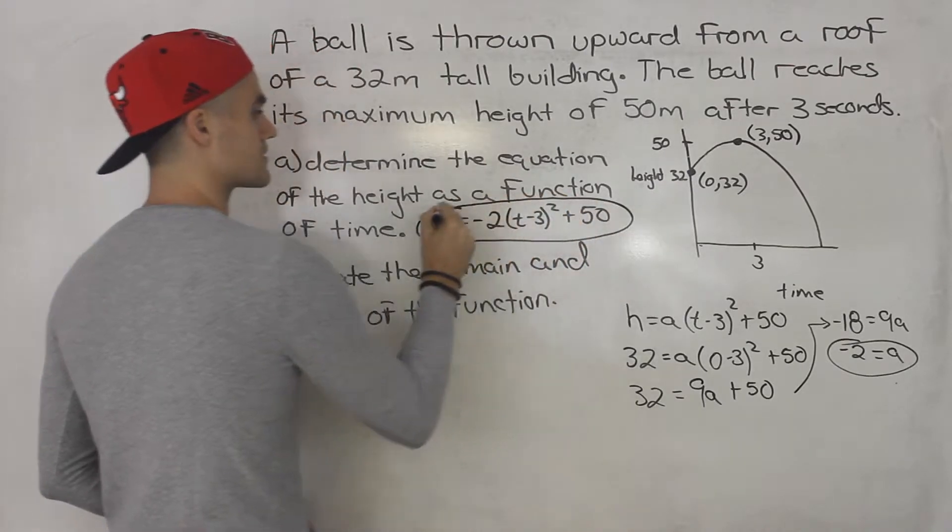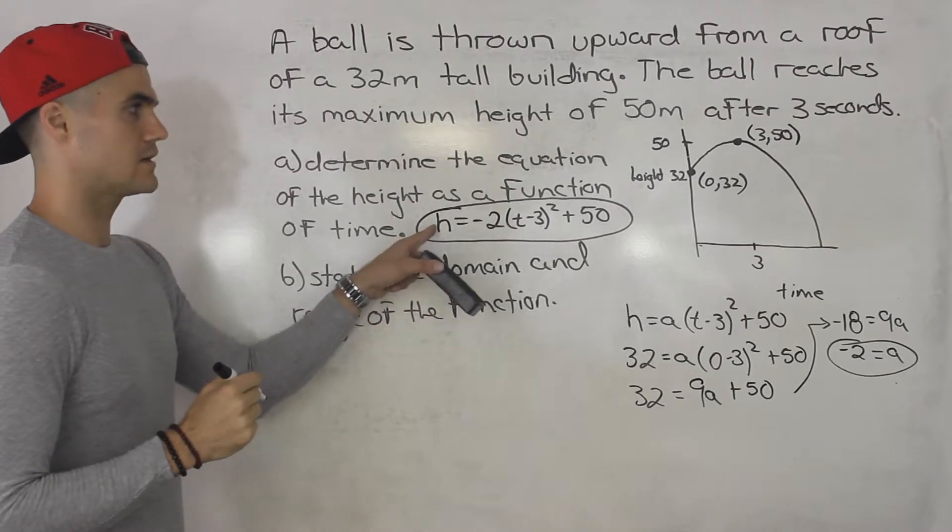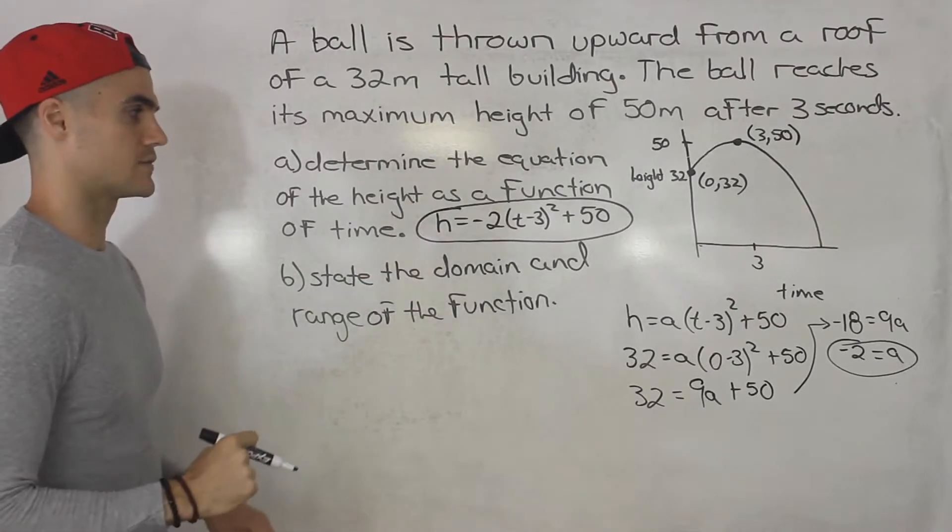So part A, this function is h equals negative 2, t minus 3 squared plus 50. That there is the answer to part A. That's the equation of the height of the ball as a function of time.